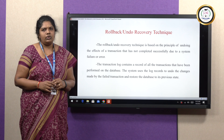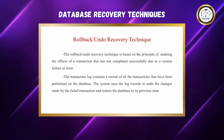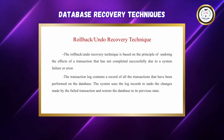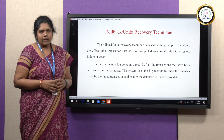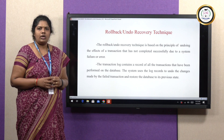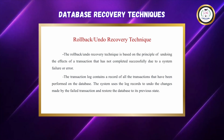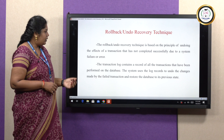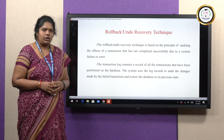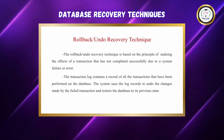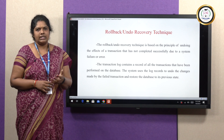Coming to the rollback and undo recovery technique, it is based on the principle of undoing the operations which are done by the failed transaction. Once the transaction fails to get completed properly, the changes done by the transaction should not affect the database. So the rollback will perform the operation of undoing the transaction. The database always maintains a transaction log which has the log record of all the transactions that occur in the database. With the help of that, the undo changes are applied when the transaction faces a failure.